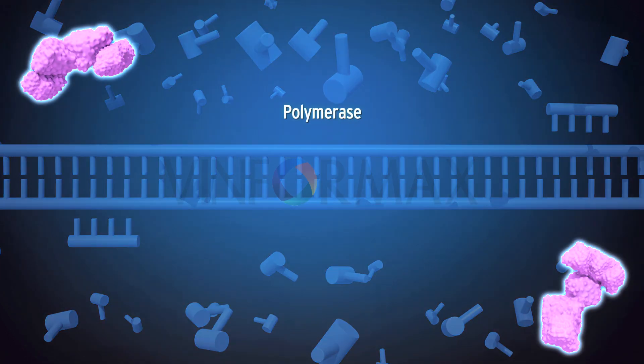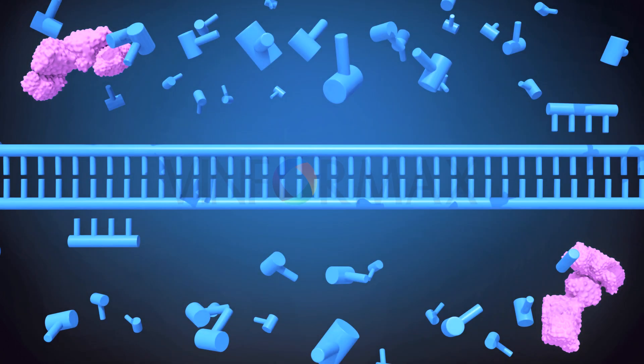A polymerase enzyme is employed to extend the strands. The first and most commonly used one is Taq polymerase from the organism Thermus aquaticus. It is heat resistant and can withstand high temperatures.